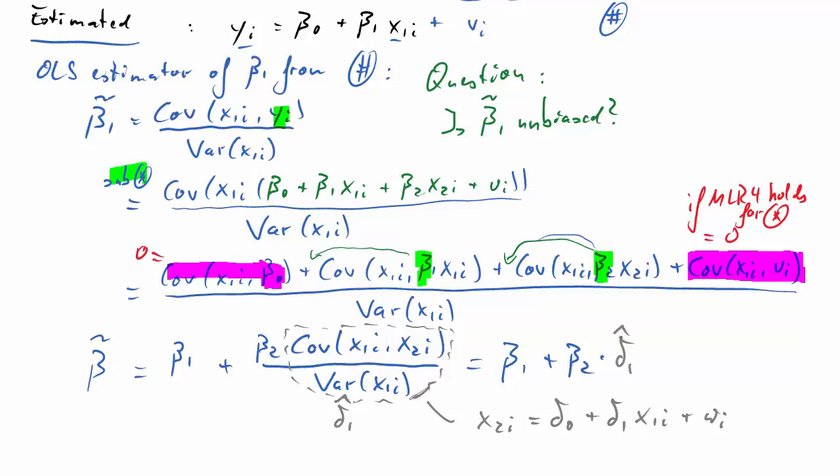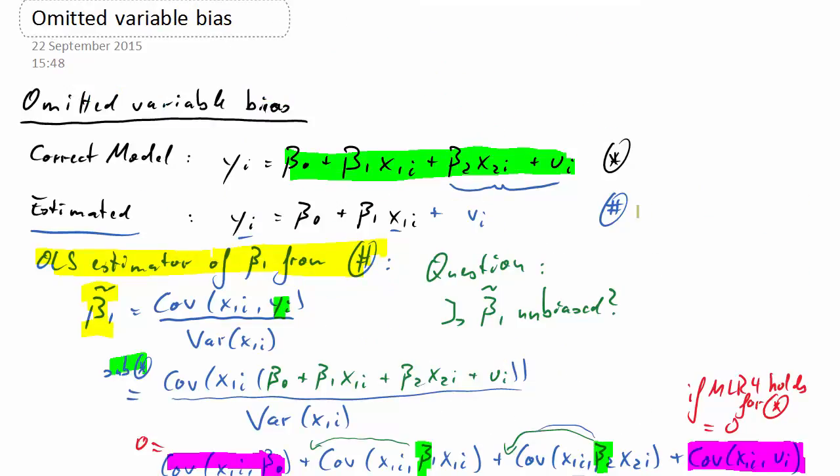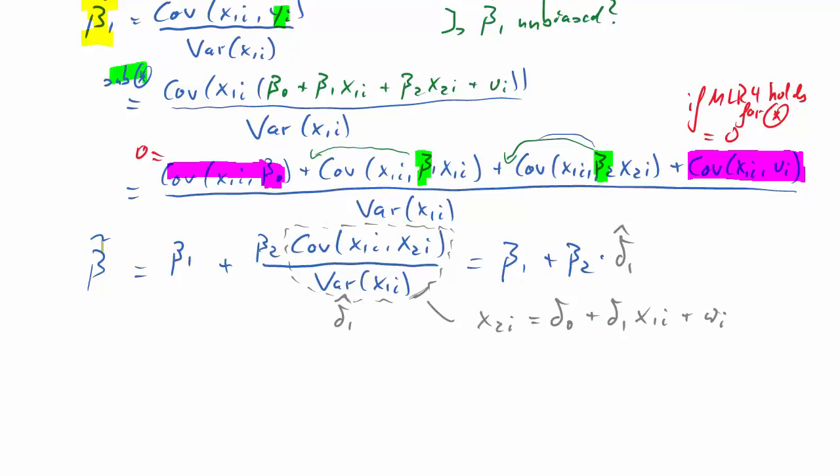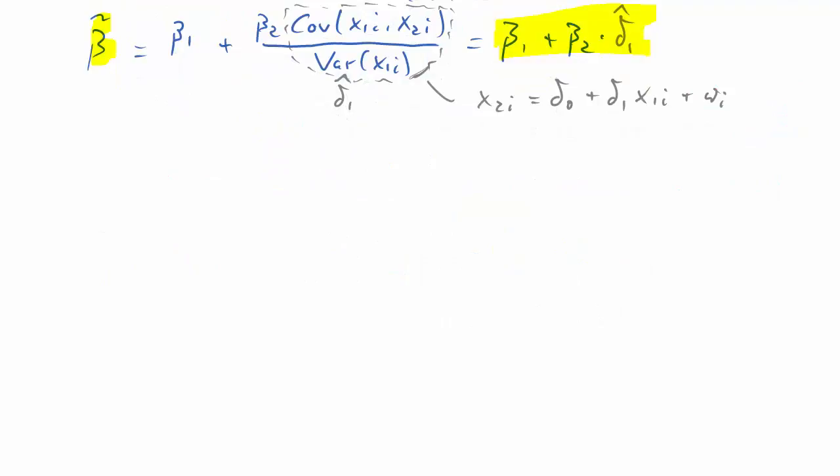So recall what we did: we took the definition of our OLS estimator for beta 1 from our estimation model, the one without x2, and we figured out that beta 1 tilde is equal to beta 1 plus beta 2 times delta 1 hat. From this equation, we can bring the beta 1 to the left-hand side, and on the right-hand side we get what we call the bias term, beta 2 times delta 1 hat.